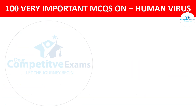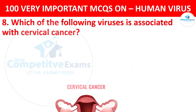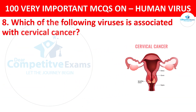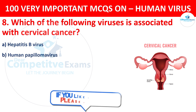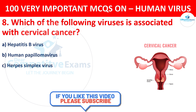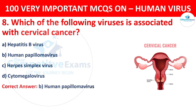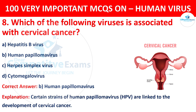Question 8. Which of the following viruses is associated with cervical cancer? Your options are Hepatitis B virus, Human Papilloma virus, Herpes simplex virus, or Cytomegalovirus. The correct answer is B, that is Human Papilloma virus. Certain strains of Human Papilloma virus (HPV) are linked to the development of cervical cancer.